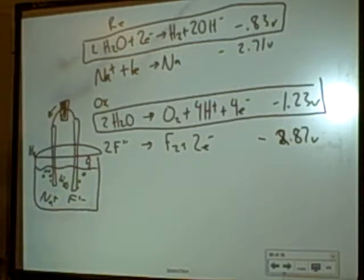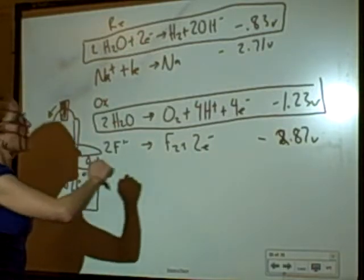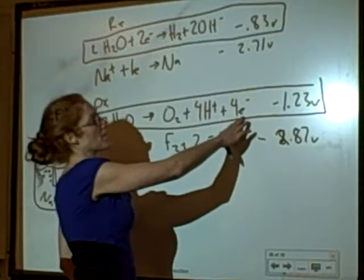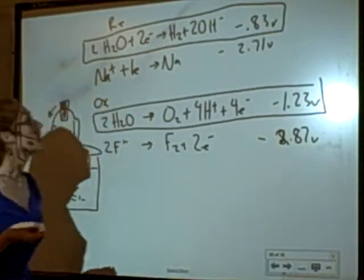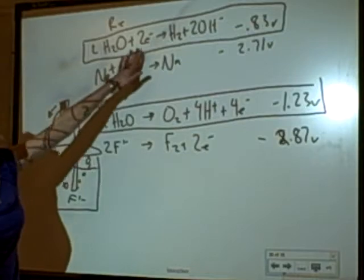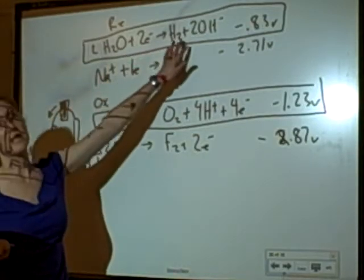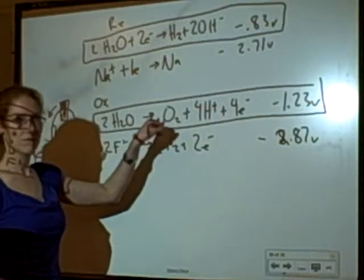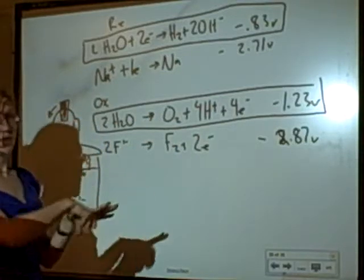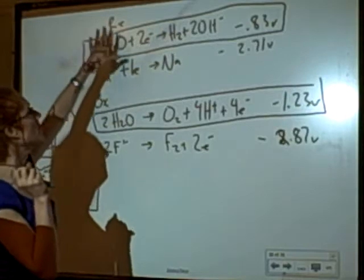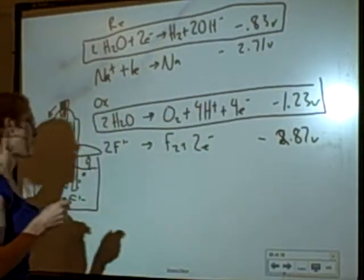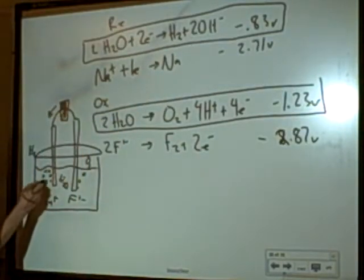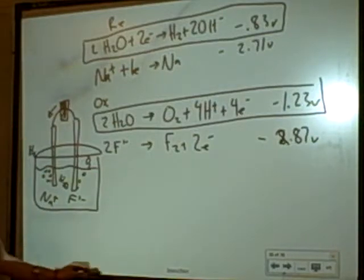One thing you can think about is that you need four electrons to make a mole of O2. You only need two electrons to make a mole of H2. So, every time you make a mole of O2, those four electrons that are being taken off go to the hydrogen and make two moles of H2. I'm going to make twice as many bubbles of H2.